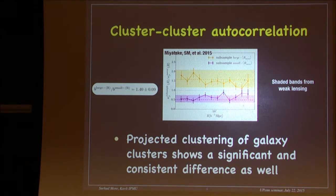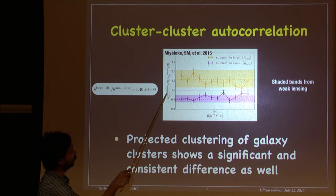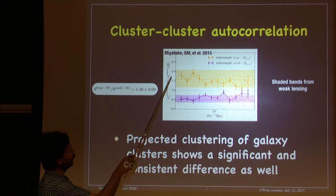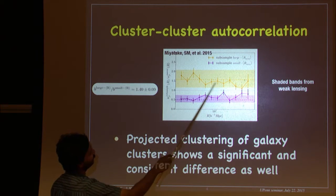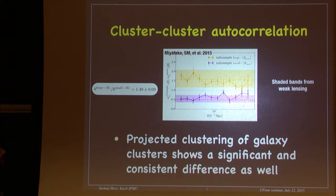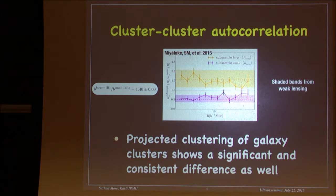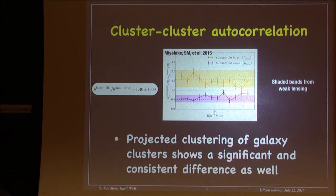We get a much higher signal-to-noise ratio from the autocorrelation of these clusters. This plot shows the projected correlation of each cluster subsample divided by the parent sample, as a function of radius. The large r_mem subsample and the small r_mem subsample show a clear difference — the ratio is 1.4 ± 0.09 from the clustering results. The bands from weak lensing are shown with shaded regions and give consistent answers.